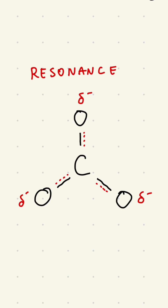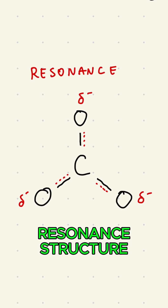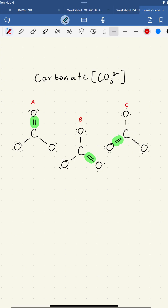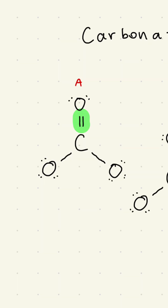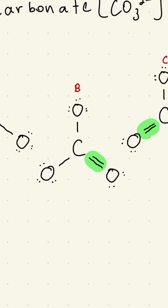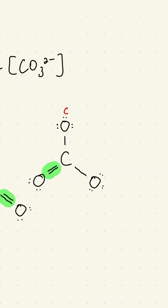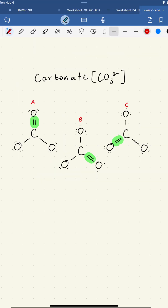If you're confused about what a picture like this means, it's called a resonant structure. A resonant structure exists when there are two or more possible equivalent forms that a compound's Lewis structure can take, depending on how you've decided to distribute the electrons.